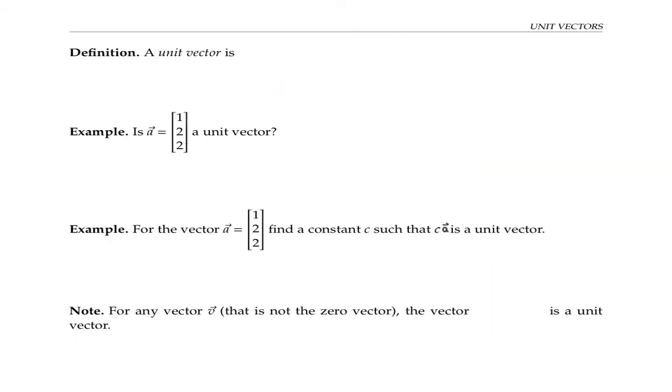A unit vector is a vector of length one. So let's check, for example, if this vector a is a unit vector. If we take its length, square root of 1² + 2² + 2², we get square root of nine, which is three, which is definitely not one. So the answer here is no.